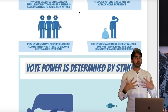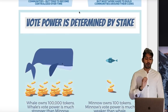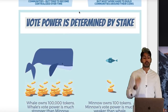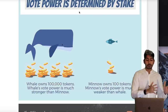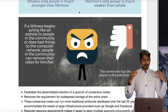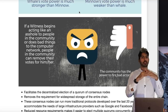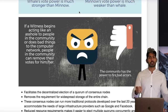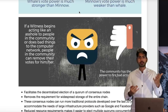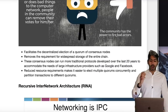With delegated proof-of-stake — which is what Ouroboros implements — voting power is determined by how much stake you have. A whale owning 100,000 tokens has much more voting power than a minnow owning 100 tokens. It facilitates the decentralized election of a quorum of consensus nodes — not completely decentralized, not totally centralized, but a mix. It's like liquid democracy — delegated proof-of-stake. You've got delegates that people vote for, and if a delegate is corrupt, since everything is transparent, you just fire the delegate and find a new one. It also removes the requirement for widespread storage of the entire chain, so not every node has to download a full copy of the blockchain, which speeds up transactions.